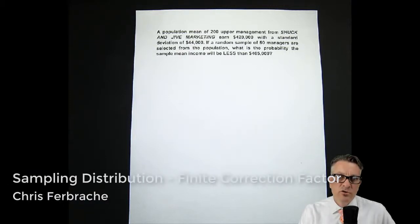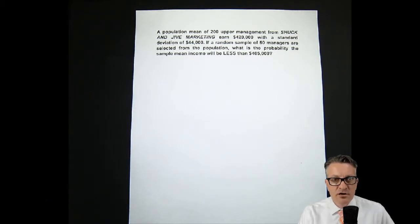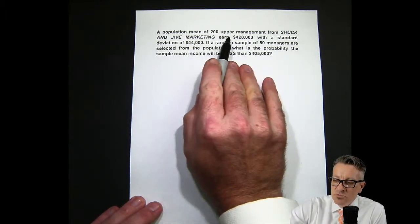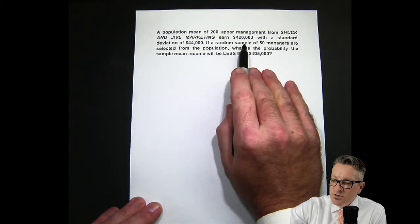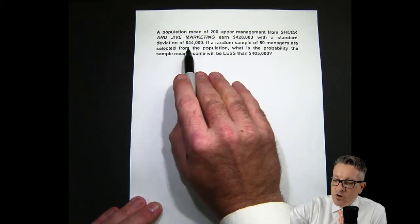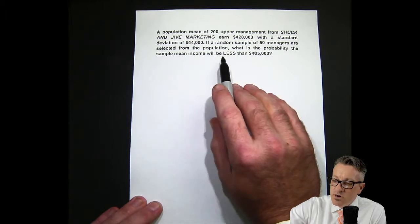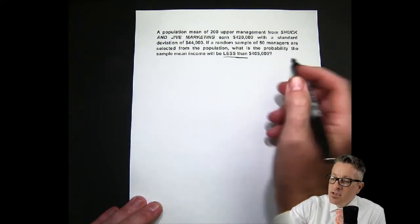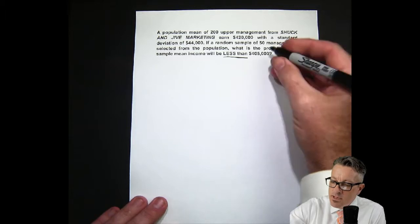Hi, this is Chris Ferbcci and I'm going to review a sampling distribution problem with a finite correction factor — essentially a large sample relative to the population. A population of 200 upper management selected from Shuck and Jive Marketing earn $420,000 a year with a standard deviation of $44,000. If a random sample of 50 managers are selected, what is the probability the sample mean income will be less than $405,000?